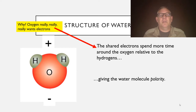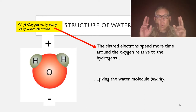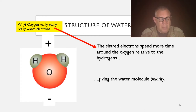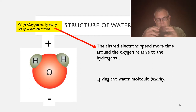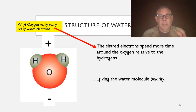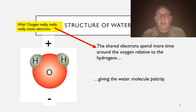Why do those electrons spend more time around the oxygen? Oxygen really wants electrons. Remember that all atoms want to fill their outer valence shell, and oxygen is very electronegative — it has a high affinity for electrons. By holding those electrons tighter, that's a lower energy state. This will be important when we talk about metabolism, because that's why you have to breathe in oxygen — that oxygen really wants electrons, it strips electrons from your food, and in the process you release energy.